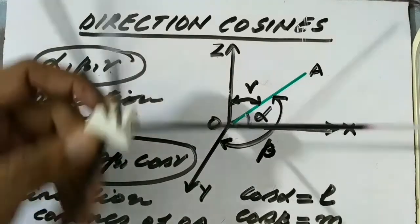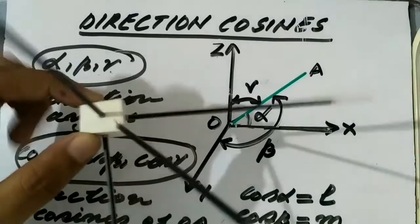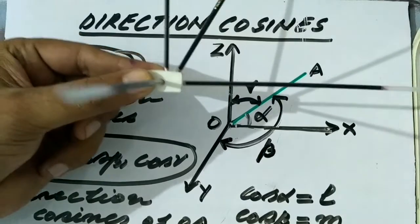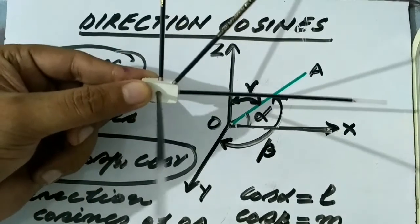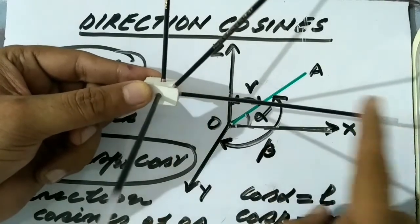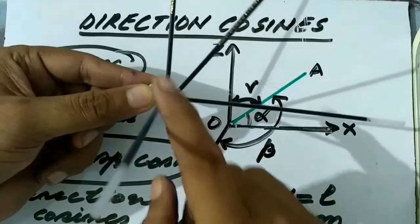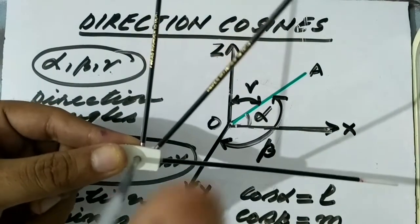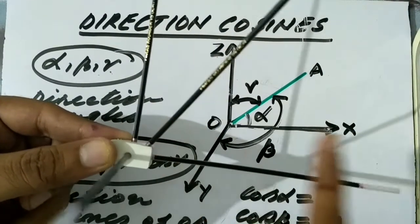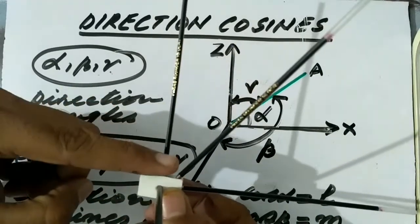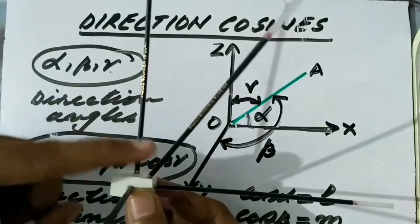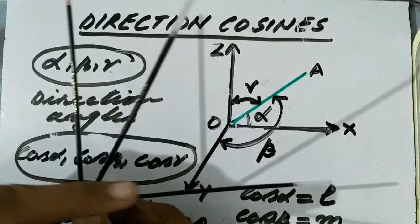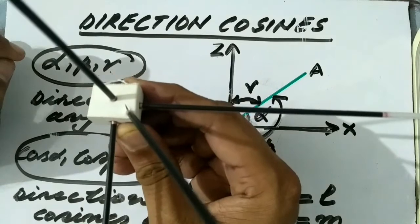Now let us consider this model which I have made to facilitate students in understanding this concept. This is the three-dimensional coordinate system. These three mutually perpendicular straight lines are the three axes — this is the y-axis, this is the x-axis, and this is the z-axis. These three are pairwise perpendicular to each other.